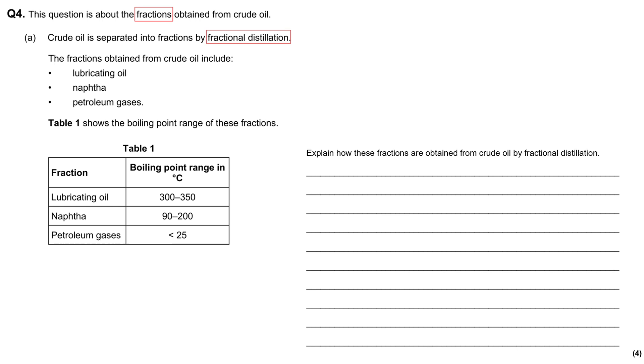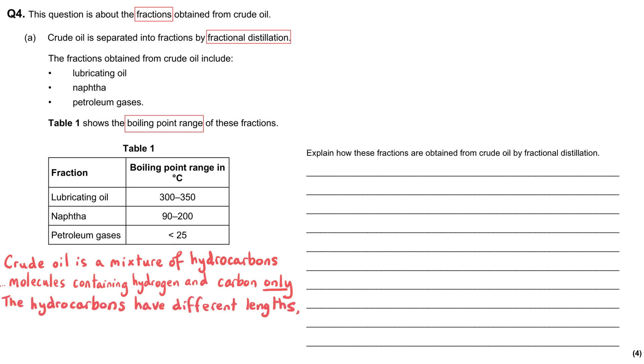Table 1 shows the boiling point ranges of these fractions. Crude oil is a mixture of hydrocarbons which are molecules made from only hydrogen and carbon. These hydrocarbons vary dramatically in length.